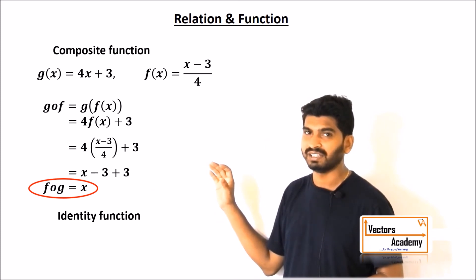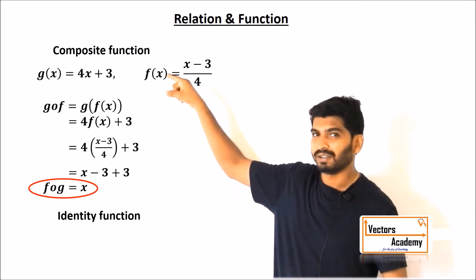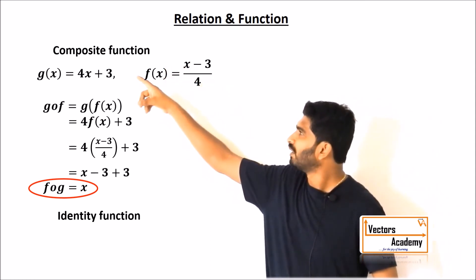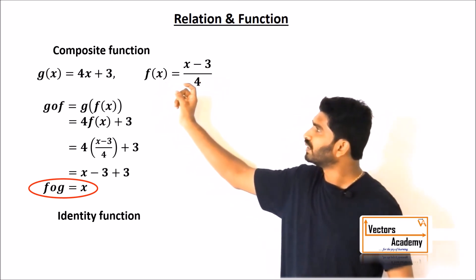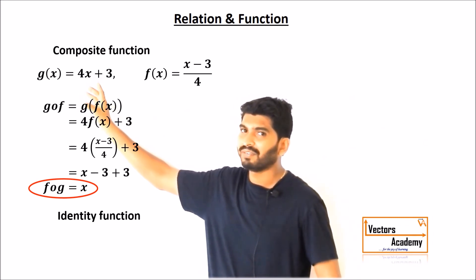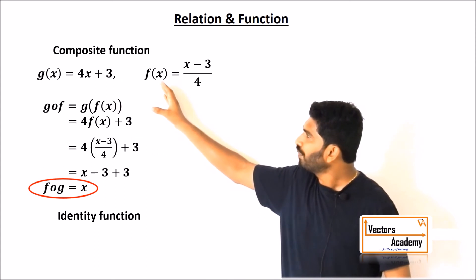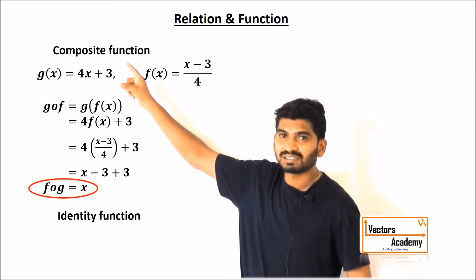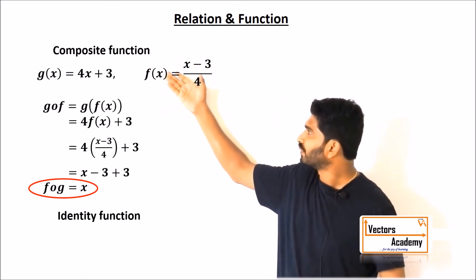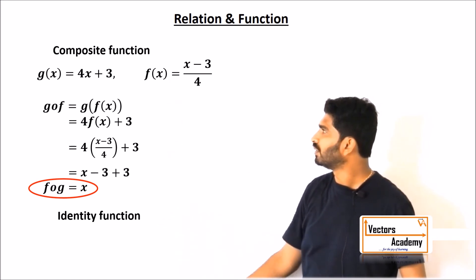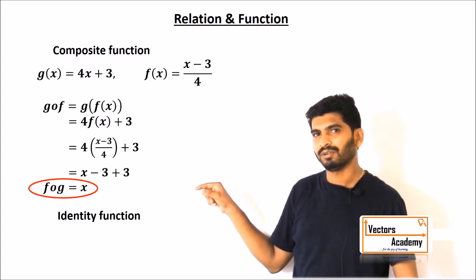Another very important concept is the composite function — a function within a function. Suppose there are two functions f(x) and g(x). To find the composite function f of g, written as f(g(x)), we replace all the x in function f with the function g(x). Once we do that substitution and simplify, we get the composite function.